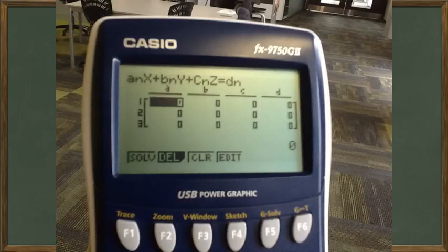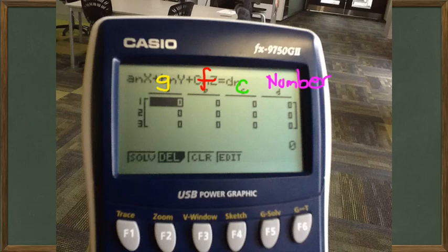Okay, hopefully your calculator should look like this. And the idea is, you're going to write all the coefficients of g in this column, all the coefficients of f in this column, the coefficients of c in this column. And finally,